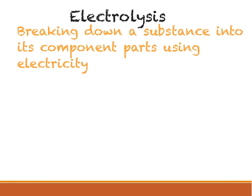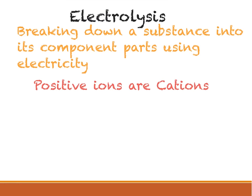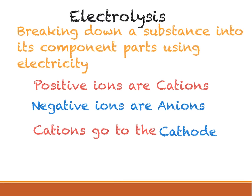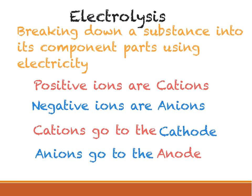This means that there are free ions that can conduct the electricity, and therefore the electrical circuit can be completed, with the positive ions being called cations and the negative ions being called anions. The cations go to the cathode, which is the negative electrode, and the anions go to the anode, which is the positive electrode.